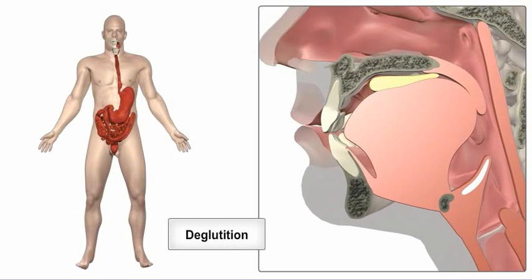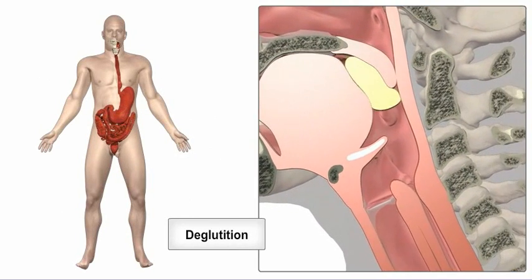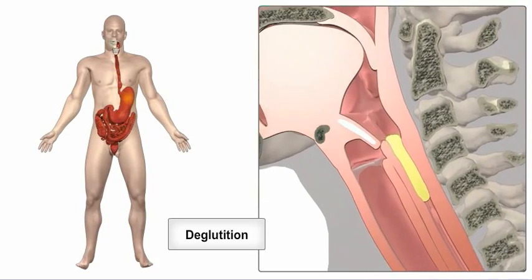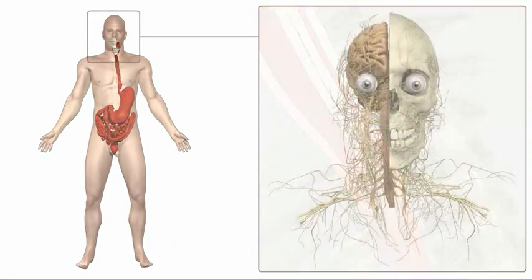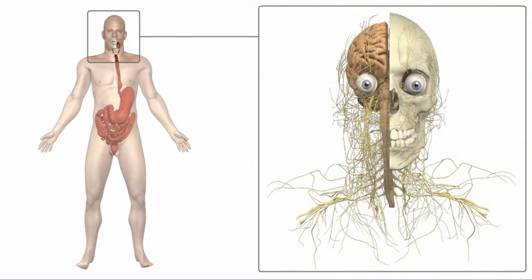Swallowing, or deglutition, is the process by which food passes from the mouth to the stomach. This movement is controlled by the nervous system and involves both voluntary and involuntary muscle contractions.